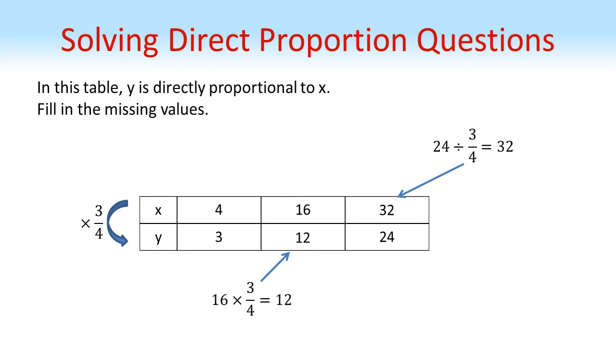And again, we can double check by comparing the columns. So to get from 4 and 3 to 16 and 12, you'd multiply both of them by 4. To get from 16, 12 to 32, 24, you'd multiply both by 2. So again, we've got that multiplication going both ways, both between the columns and between the rows.